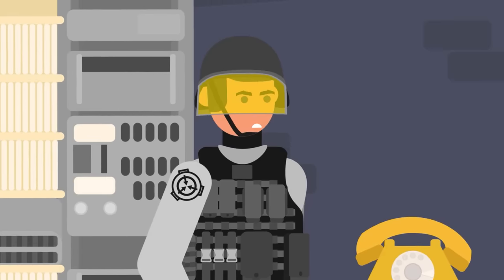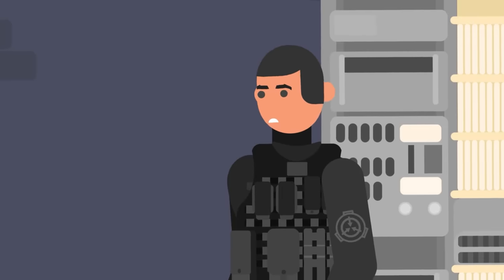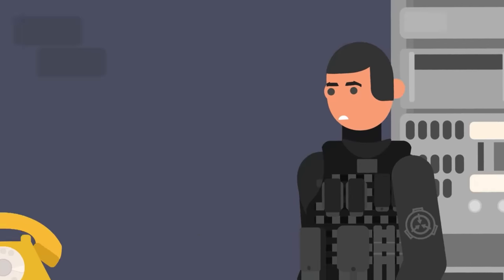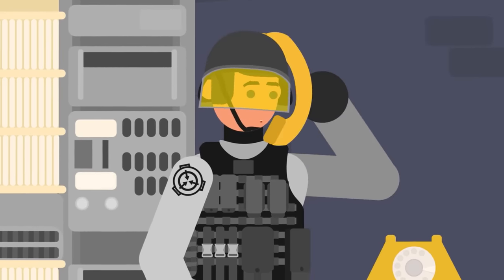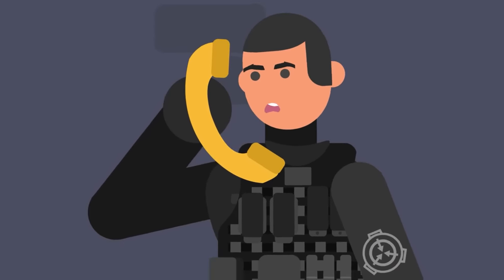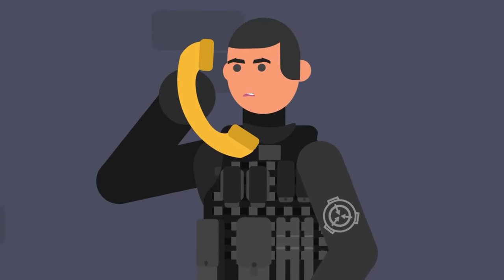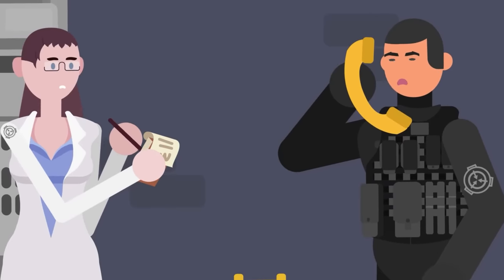The SCP-1193-02 phone is monitored at all times by a trained Foundation interrogator, and standard procedure dictates that SCP-1193-02 is to be answered on or before the third ring. During these calls, the interrogator will attempt to elicit valuable information about SCP-1193 from the voice, and all valuable intel will then be recorded and logged.